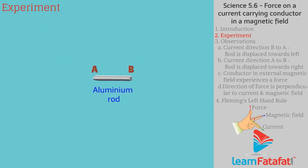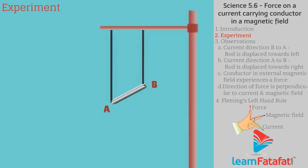Take a small aluminium rod AB. Connect its two ends A and B with connecting wires and suspend it horizontally using a stand.